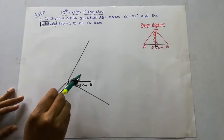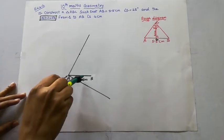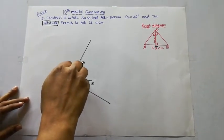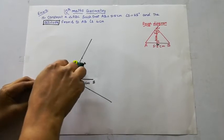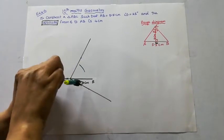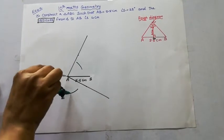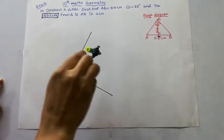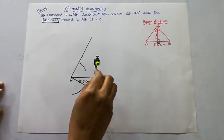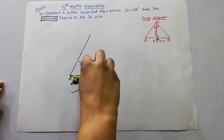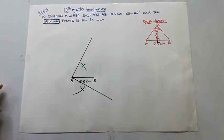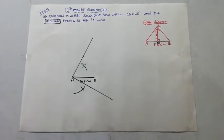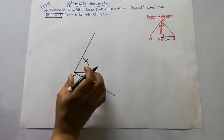Mark more than half on the line AB. Then draw the perpendicular bisector line of AB. Find the point where the arc crosses — that gives us the perpendicular bisector.